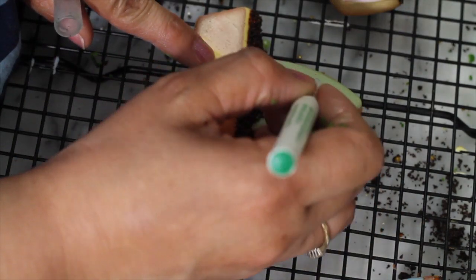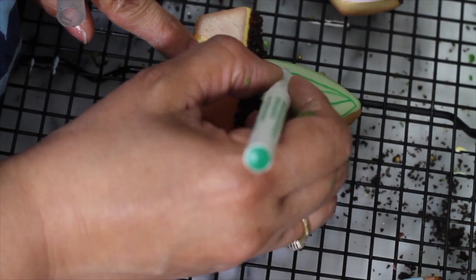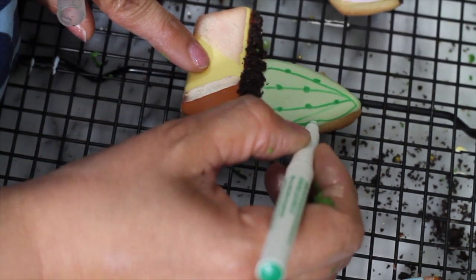If you don't want to add a lot of detail to your cookie, you can use an edible marker to mark the lines and also to make the spines.